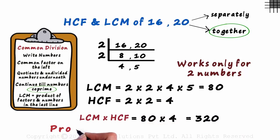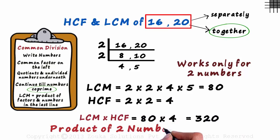Now let's find the product of the two numbers. It will be sixteen times twenty, which equals three hundred and twenty.